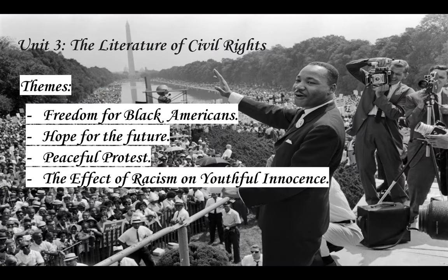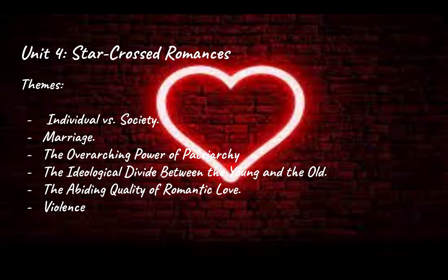Unit three, the Literature of Civil Rights, covers themes such as freedom for Black Americans, hope for the future, peaceful protest, and the effect of racism on youthful innocence. Unit number four, Star-Crossed Romances, covers themes such as individual versus society, marriage, the overarching power of patriarchy, the ideological divide between the young and the old, the abiding quality of romantic love, and violence.